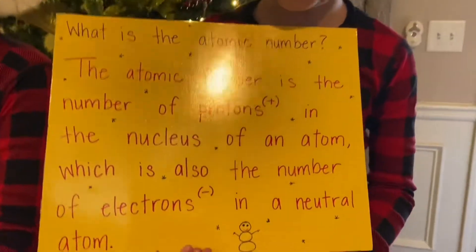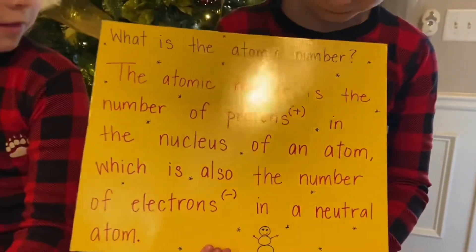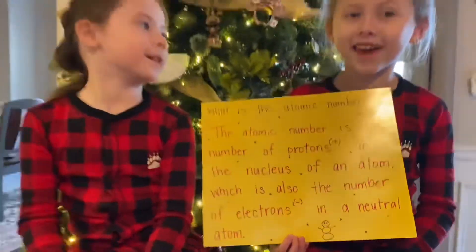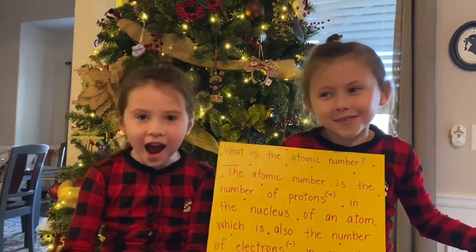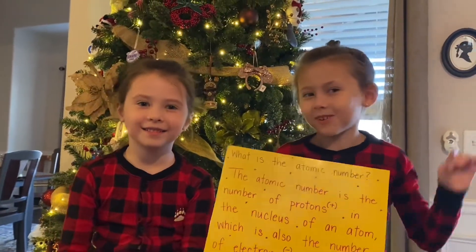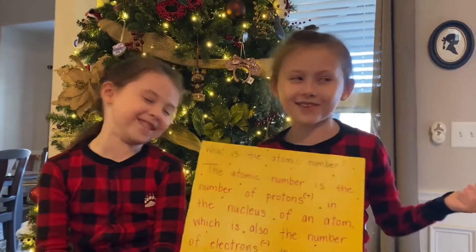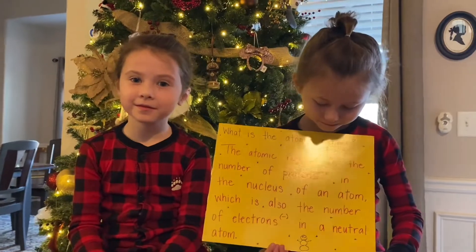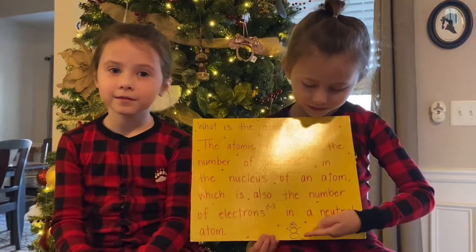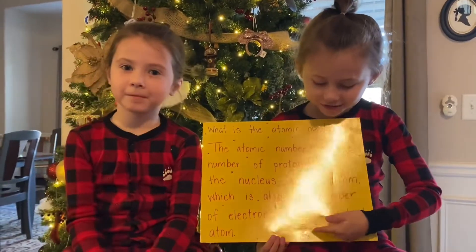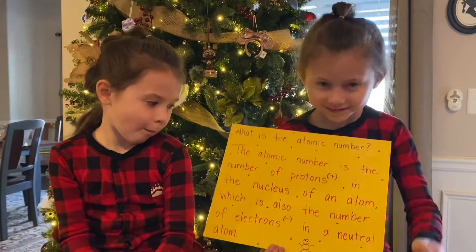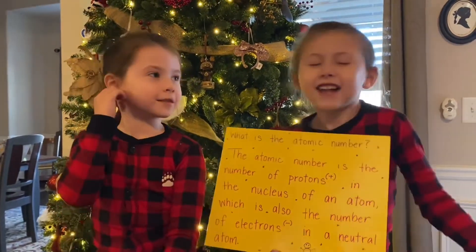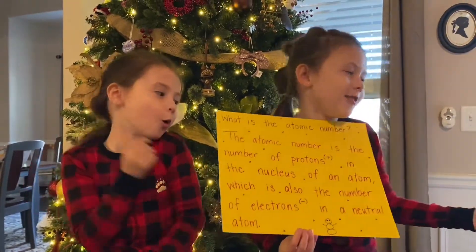Why have I drawn little blue things all over my paper? It's snow dust — snowflakes — all over our paper, and also a snowman. Why would I draw snow dust all over our paper? Because the song is set to 'Let It Snow, Let It Snow, Let It Snow.'